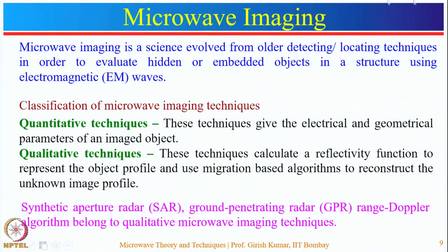Microwave imaging can be classified in two ways: quantitative techniques and qualitative techniques. Quantitative techniques give the electrical and geometrical parameters of the imaged object — electrical meaning electromagnetic properties, and geometrical meaning the shape, size, and location of the hidden object. Qualitative techniques calculate the reflectivity function of the hidden object, use simplification approximations, and then apply back-propagation algorithms to construct the unknown image profile. Synthetic aperture radar, ground penetrating radar, and Doppler radar belong to the qualitative technique.